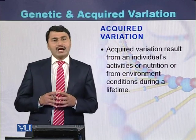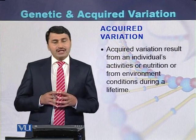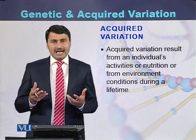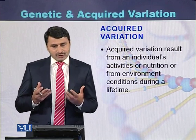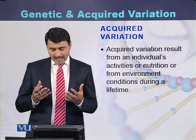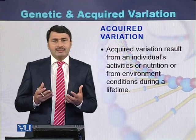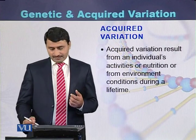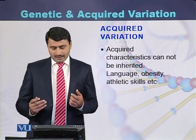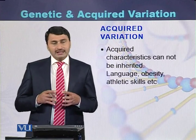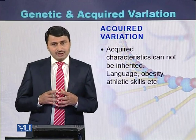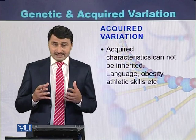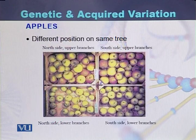Acquired variations result from an individual's activities. They are controlled by the individual's activity as well as by the environment where an individual is living. Acquired variations cannot be inherited. Examples include language, obesity, and athletic skills — they usually do not pass on to the next generation.